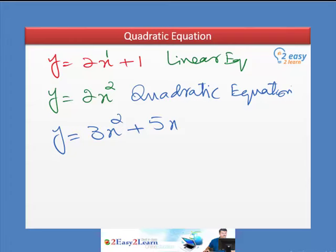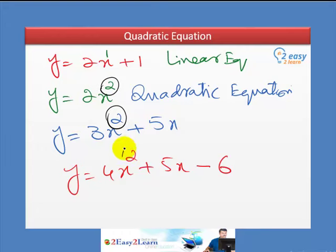Now, it can be a three term equation. So, y equals 4x square plus 5x minus 6. In all these three equations, if you observe, the highest power of x is equal to 2. If it is not 2, less than 2, for example, like 1, it is a linear equation, and if it is greater than 2, then the name of equation depends upon the power or value of exponent.